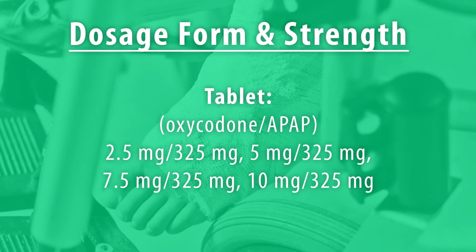Dosage form and strength: an important note is that the oxycodone strength is listed first and acetaminophen after. The medication comes as a tablet in 2.5-325mg, 5-325mg, 7.5-325mg, and 10-325mg strengths.